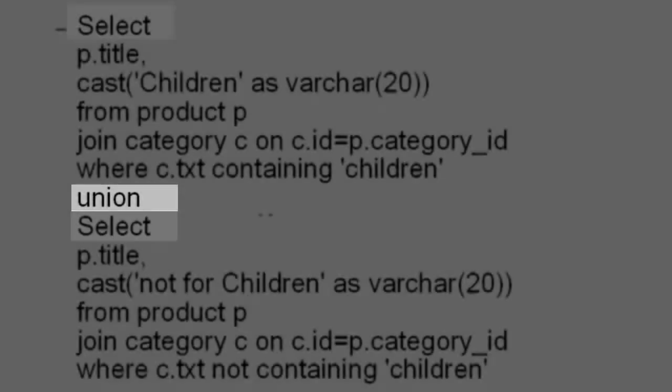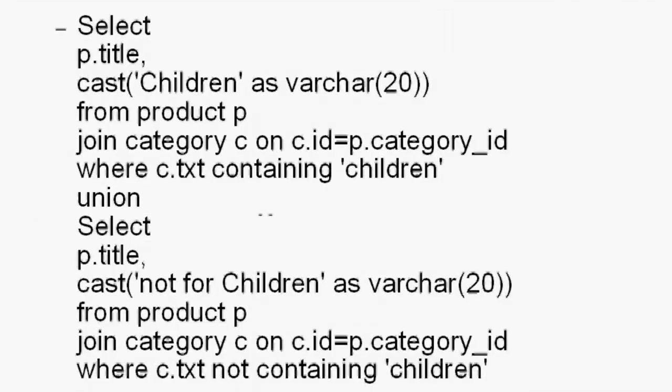The syntax is simple — two select statements with a UNION in between to fuse them together: SELECT P.Title, CAST('children' AS VARCHAR(20)) FROM Product P JOIN Category C ON C.ID = P.CategoryID WHERE C.Text CONTAINING 'children' UNION SELECT P.Title, CAST('not for children' AS VARCHAR(20)) FROM Product P JOIN Category C ON C.ID = P.CategoryID WHERE C.Text NOT CONTAINING 'children'. Here, all titles are being selected that belong to the category children. These results are then combined with another set where the category does not contain the text children.